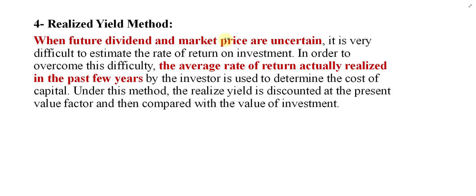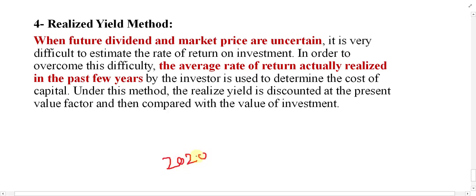So the question is: if the future is uncertain and you cannot estimate the cost, how can you find out the cost of equity? In this case, we have to refer to the past performance. We have to see how much was the cost of equity in the past few years. For example, if you want to find out the cost of equity for 2020 and the future is uncertain, you have to look at past years.